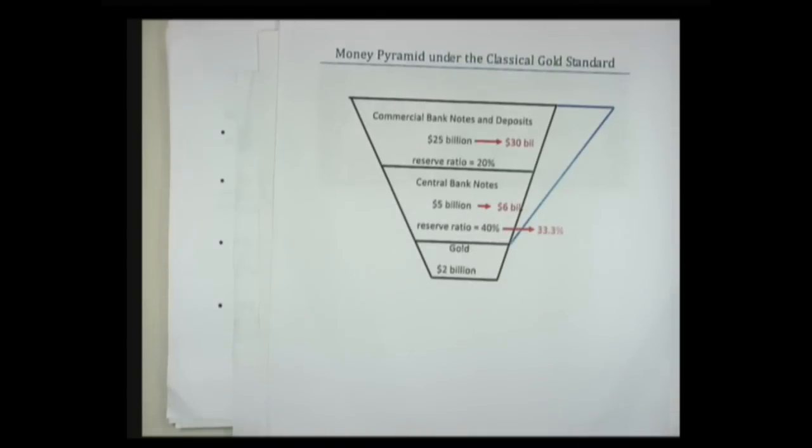What constrained governments from increasing the money supply and causing inflation under the gold standard was something called the price-specie-flow mechanism — really a balance of payments process. Here's a diagram: in a classical gold standard where a central bank holds all the gold, there's $2 billion worth of gold. If the central bank has a 40% reserve ratio by law — which the Federal Reserve had into the 1960s — they would have to hold $2 billion and could only create $5 billion in central bank notes.